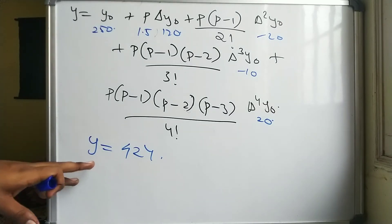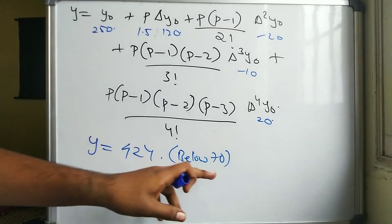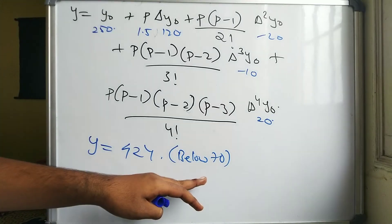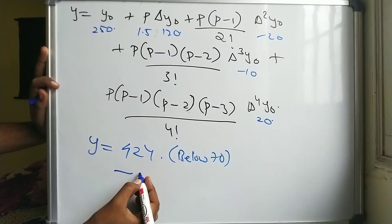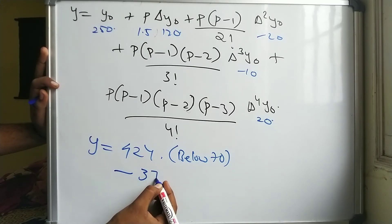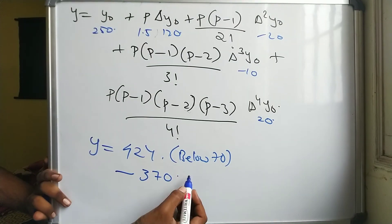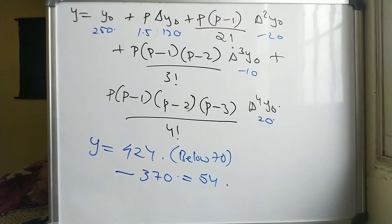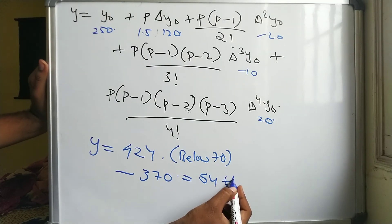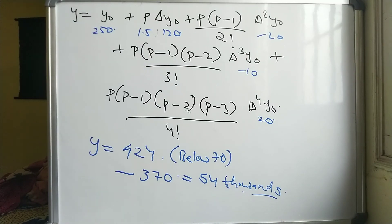We found below 70 = 424. Now subtracting below 60 = 370: 424 - 370 = 54. Since the y values are in thousands, the number of persons earning weekly wages between 60 and 70 rupees is 54,000.